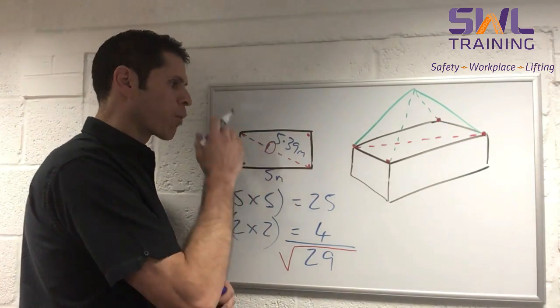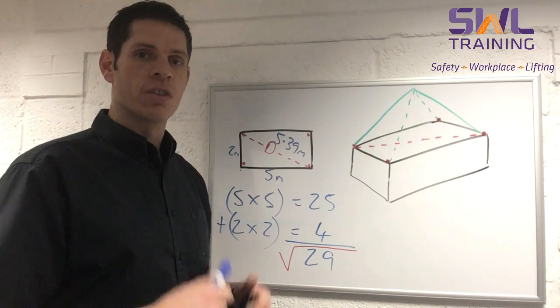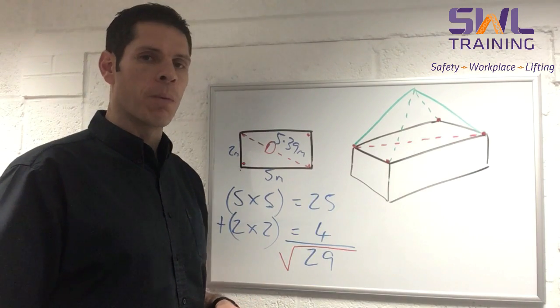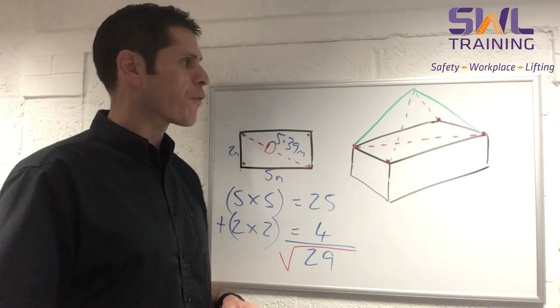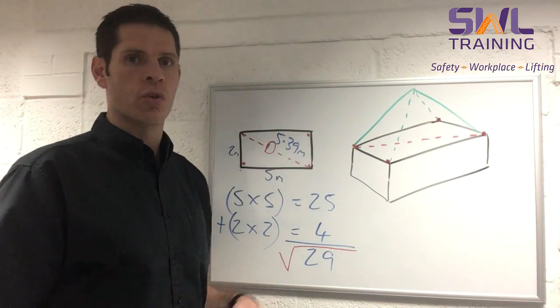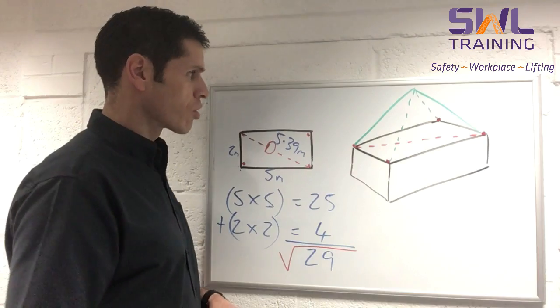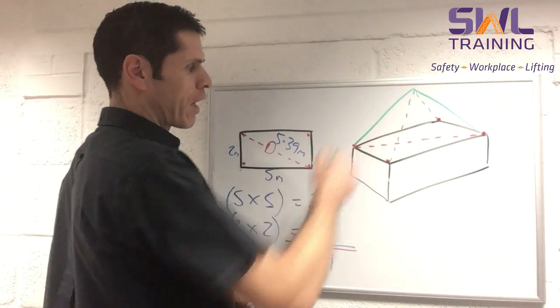So now our D distance for this load is 5.39. Now, of course, you can try that with a number of different dimensions. And you can even confirm as to whether that's right or not by drawing up to scale and just using your scale rule to measure it. But that is how Pythagoras theorem works. So from there, we've now got D. We can go back to the rule that we used before. So D divided by 1.4 for 90 degrees, or for a 60 degree included angle, our sling length would need to be equal to or greater than the 5.39 metres.